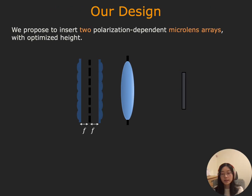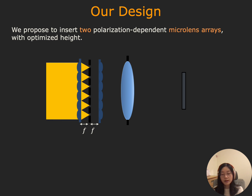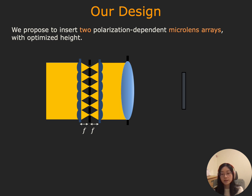We propose to insert two polarization-dependent microlens arrays with optimized heights. Both microlens arrays have the same focal length f, and the display is one f away from both face masks. The incident wavefront is first concentrated by the first microlens array. Due to the thin waist of the concentrated wavefront, they pass through the display openings, and the second microlens array then reverts this effect. Within some limits, this effectively renders the display transparent, increases light transmission rate, and shapes the wavefront that reaches the camera main lens to a better condition.